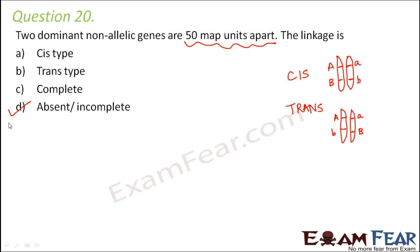The information given doesn't clearly tell us if the linkage is complete. Complete linkage would mean the two genes are located on the same chromosome and are like different alleles of the same gene. Since the distance is quite far, there is a possibility the genes are not linked at all — linkage is absent — or there is incomplete linkage. We discuss cis type and trans type only when there is complete linkage.